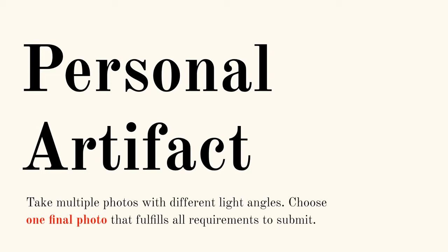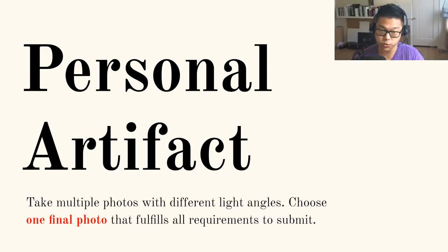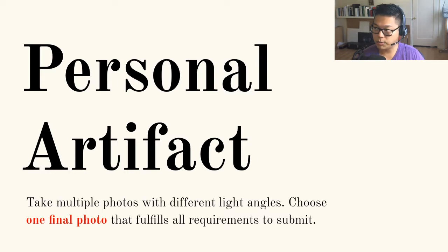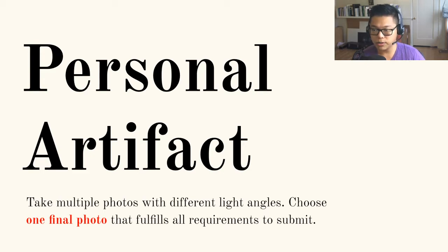So those were all the do's and don'ts. You can go ahead and review the video if you need a better sense of what each of those requirements are. What you want to do is take multiple photos with different light angles, then choose one final photo that fulfills all the requirements to submit — strong shadows, your whole hand and wrist visible, and an object that can be broken down into basic forms. It's a good time to pause the video now. Rewind if you need to look over the do's and don'ts again. Pause the video, go take your photo, and when you come back we're going to be ready to write up your description.